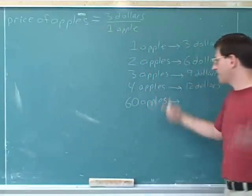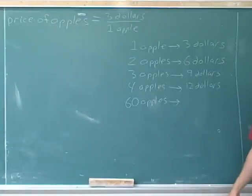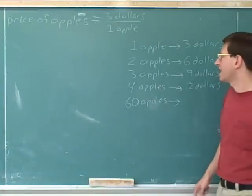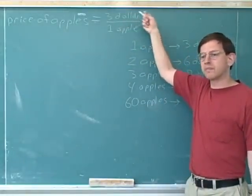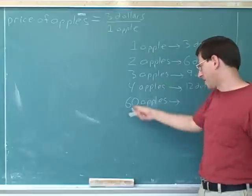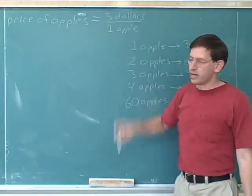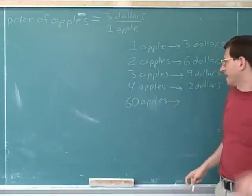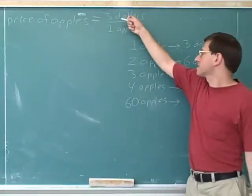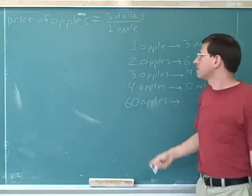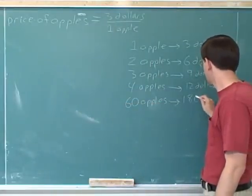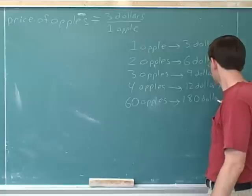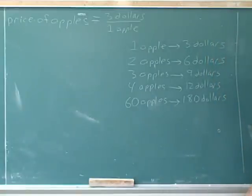Let's say you wanted to buy sixty apples — how much would you have to spend? You could solve this by addition: three plus three plus three, sixty times, because each of the sixty apples costs three dollars. But the easy way is just multiplication. Since each apple costs three dollars and we're getting sixty of them, the total price would be sixty times three, or 180 dollars.